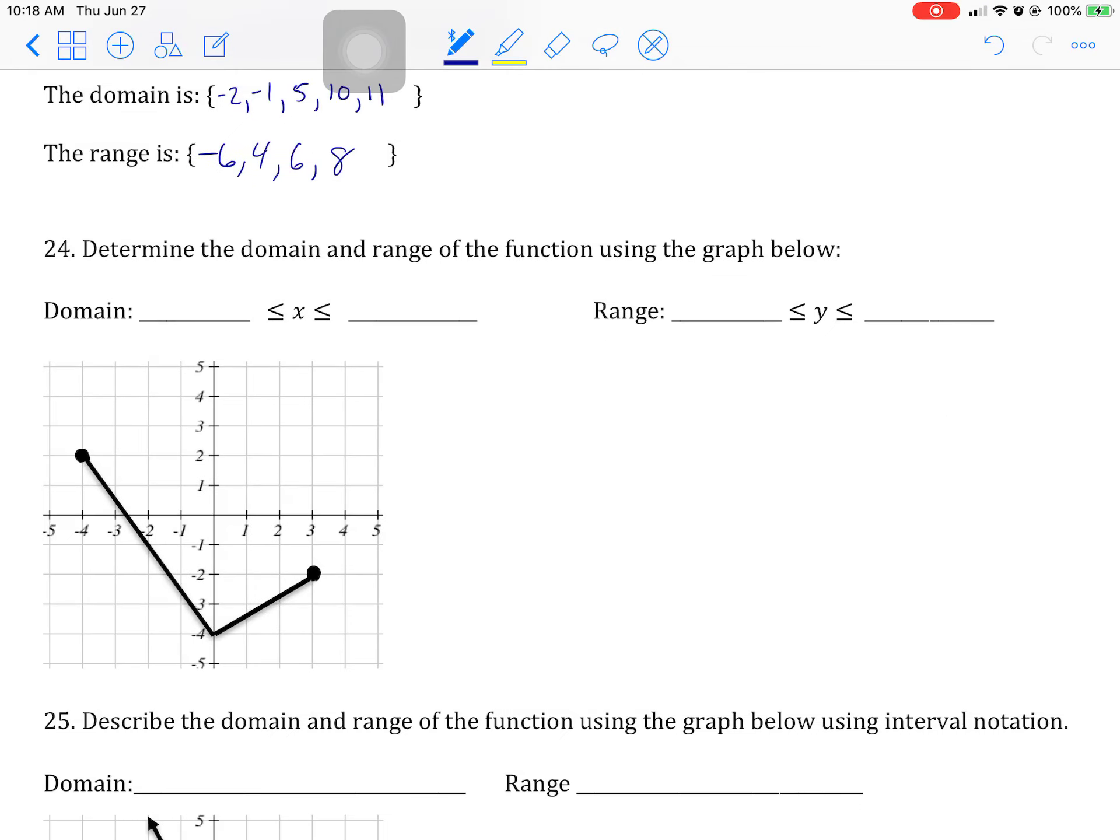Determine the domain and range of the function using the graph below. First thing I like to do is find the ordered pairs. So this is negative 4, 2. This one is 3, negative 2. And right here, even though there's not a dot, it hits there and bounces. So I need to know that that's 0, negative 4.